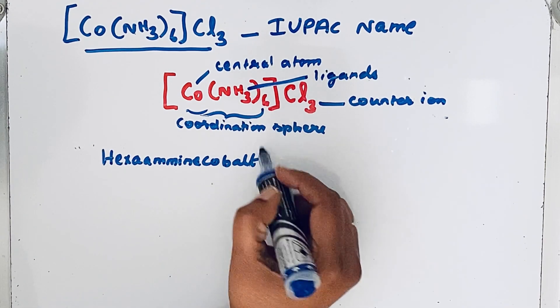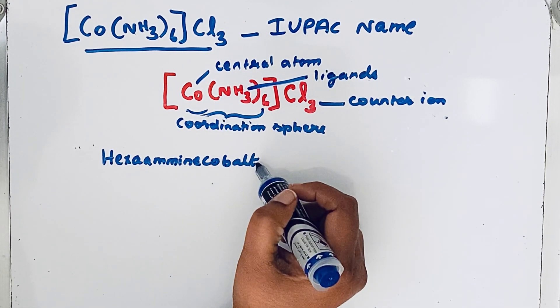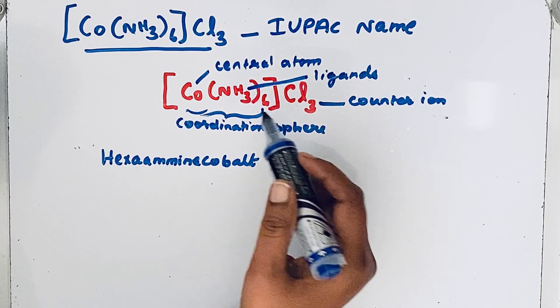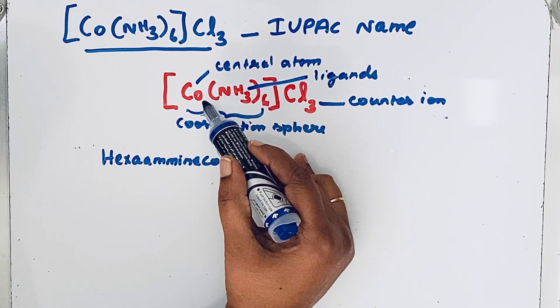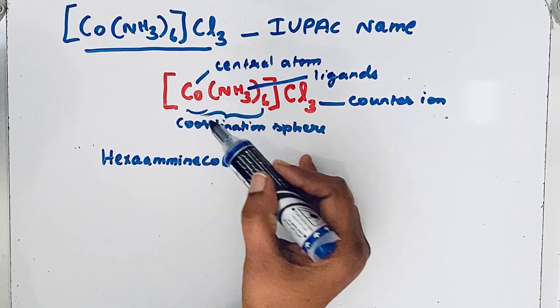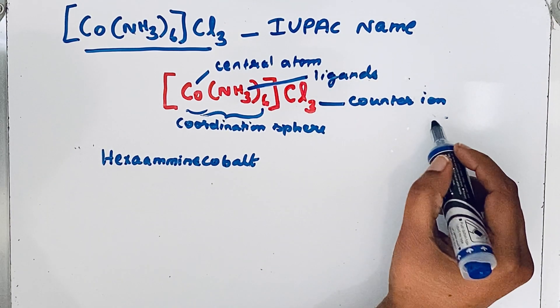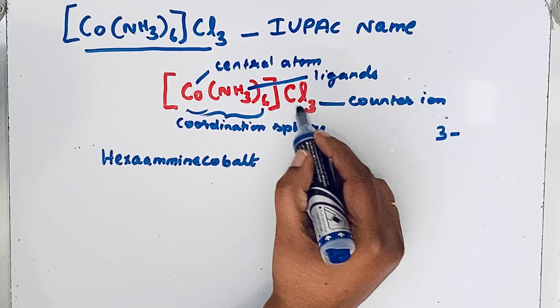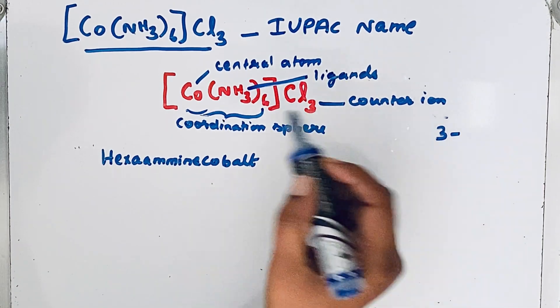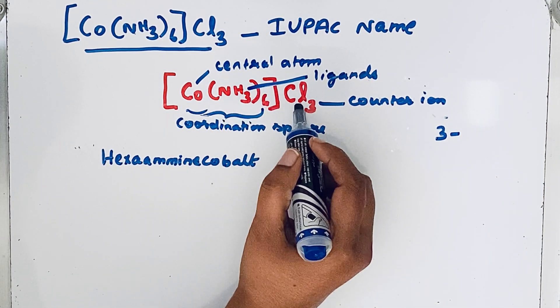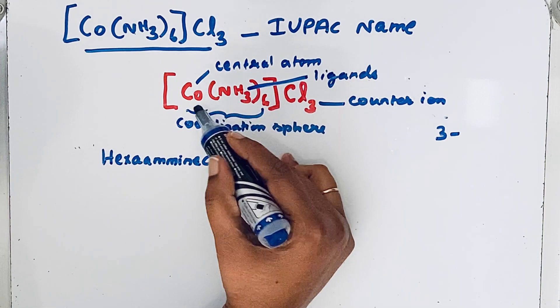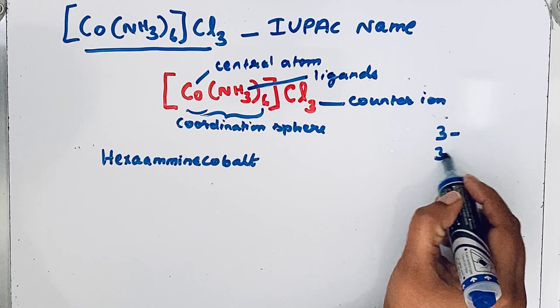Next we should write the oxidation number. To write the oxidation number of the central atom, first we should find the charge on the central atom. Here we know that counter ion Cl3, that means three minus charge for the chloride ions because three chlorine atoms are here. Since this compound is neutral, the cobalt must carry three plus charge.